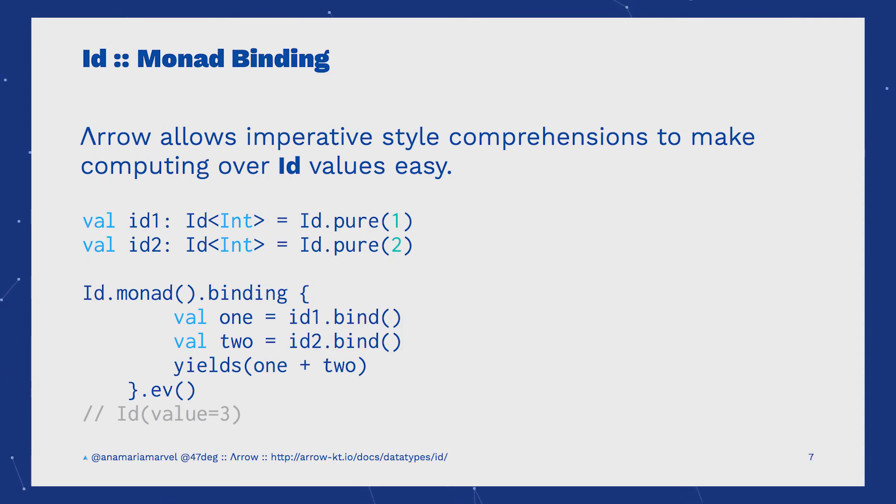Monad comprehensions let us comprehend over the potential value inside the ID, but they do so in a very imperative style,